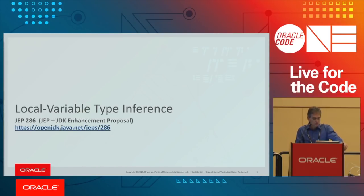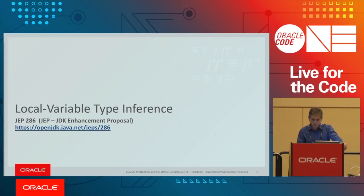Starting with local variable type inference, this is JEP 286. If you're not familiar with what a JEP is, it's essentially a JDK Enhancement Proposal — a public documentation of the feature, describing specs, plans, and everything. You can find all of these JEPs on the OpenJDK page, and there's even JEP number one, which describes what a JEP is.